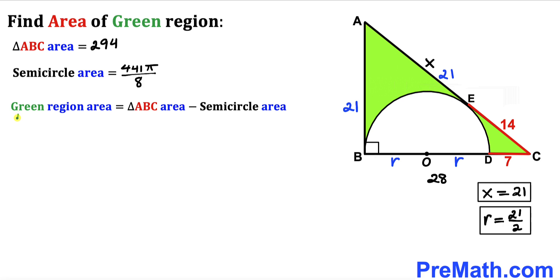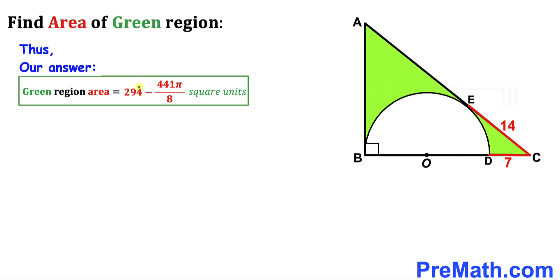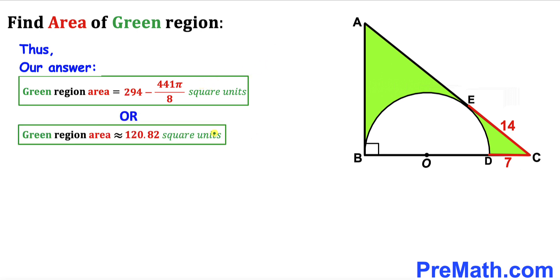For the final step, the green region area equals the triangle area minus the semicircle area: 294 − 441π/8, which is approximately 120.82 square units. Thanks for watching and please subscribe to the channel for more exciting videos.